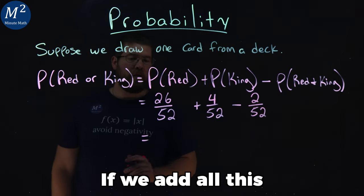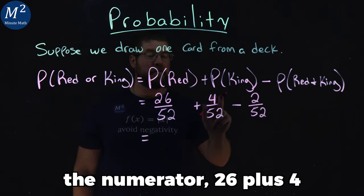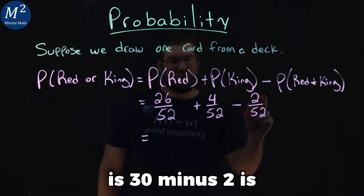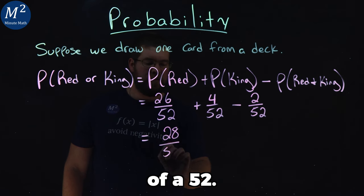If we add all this up, we can add across the numerator. 26 plus 4 is 30, minus 2 is 28. We have 28 out of 52.